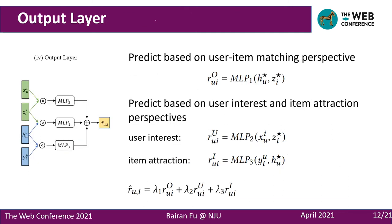The last one is the output layer. Since the user's decision on a candidate item depends on both user preference and item attribute, we firstly predict the score based on the graph-enhanced representation of user and item. Then, the user's interest in the item and the item's attraction to the user reflect the matching score between the target user and the candidate item from two different perspectives. We then predict another two matching scores based on these two perspectives to make the model more robust.